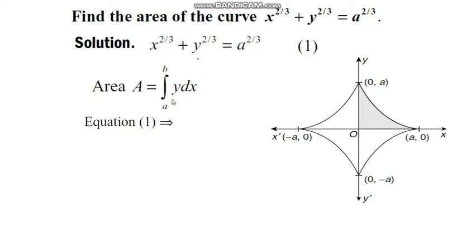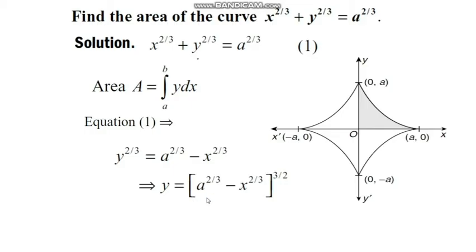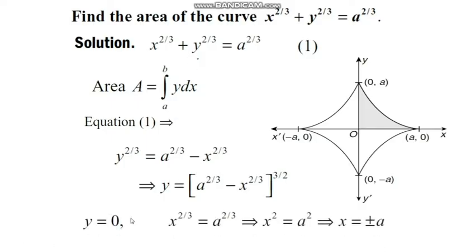We need to compute the integrand y from equation one. Equation one implies that y^(2/3) = a^(2/3) − x^(2/3). Making y the subject, we get y = (a^(2/3) − x^(2/3))^(3/2). This is the required integrand in terms of the variable x. Now we compute the limits of x by setting y = 0 in equation one.